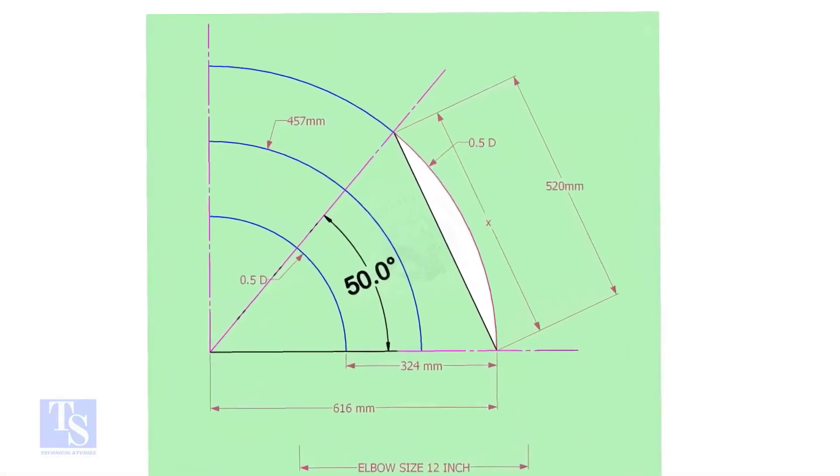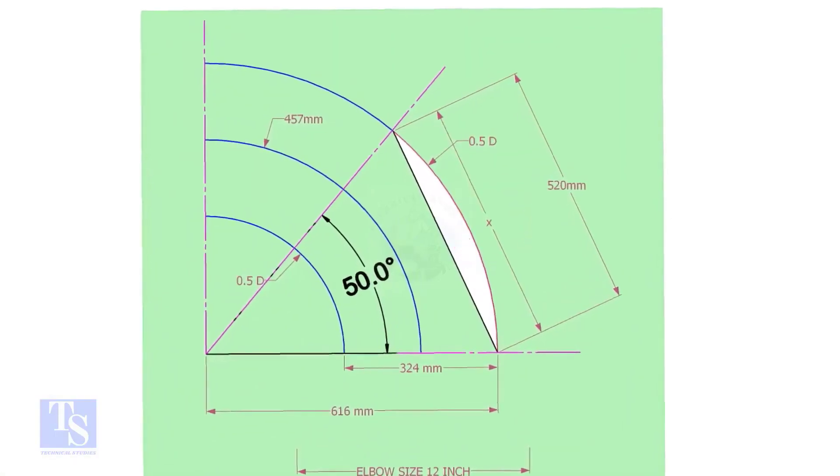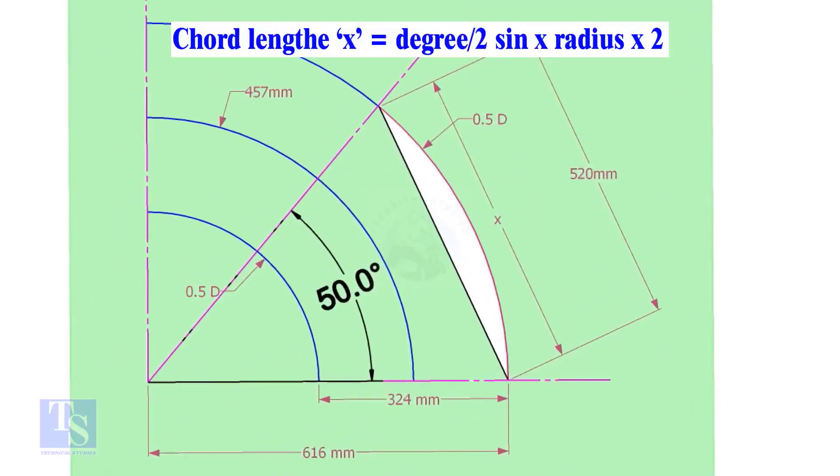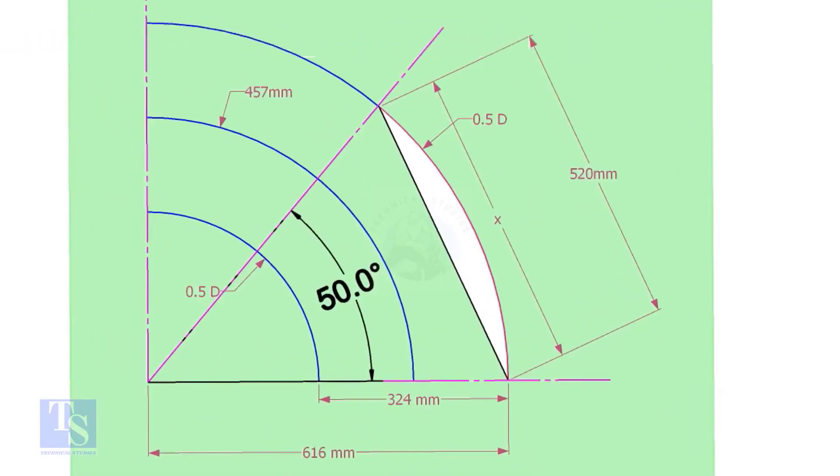Let us calculate the chord length for 50-degree of the outer arc. Chord length x equals half-degree sine multiplied by 2 radius. Here the degree is 50, and the radius is 616 millimeters.